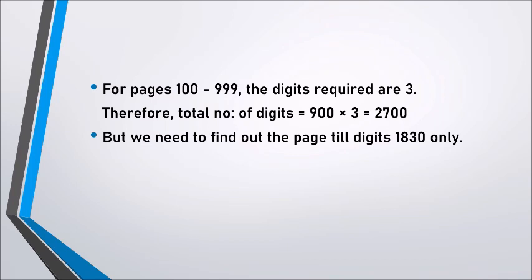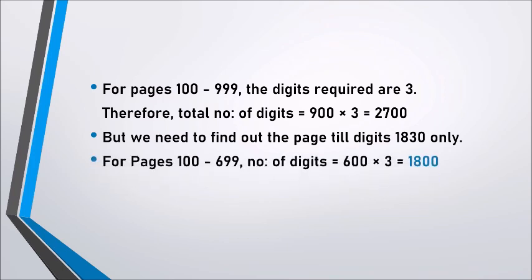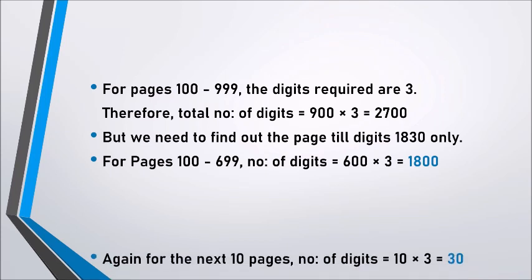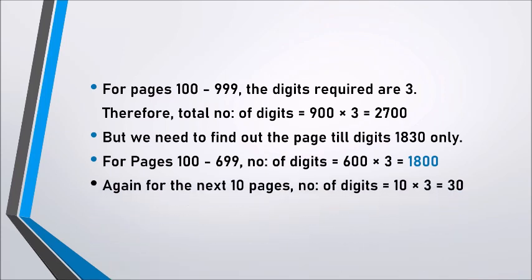Pages 100 to 699 contribute a total of 600 × 3 = 1,800 digits. The next 10 pages contribute a total of 10 × 3 = 30 digits.